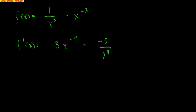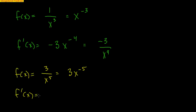Let's do another example with 3 over x to the 5th. Rewrite it as 3x to the negative 5. Now applying the power rule: the derivative is negative 15x to the negative 6, because negative 5 times 3 gives negative 15, and negative 5 minus 1 gives negative 6. Rewriting without negative exponents, the final answer is negative 15 over x to the 6th. Very simple using these rules.